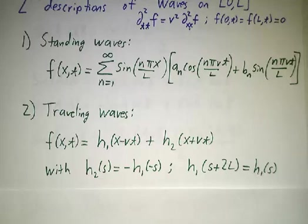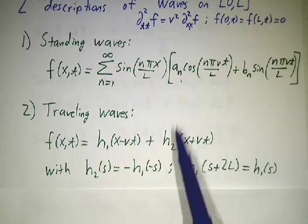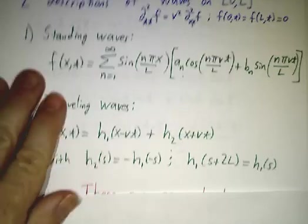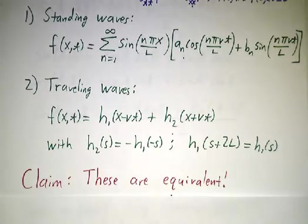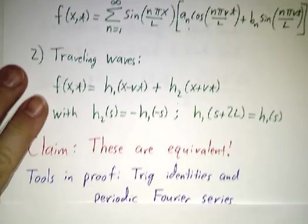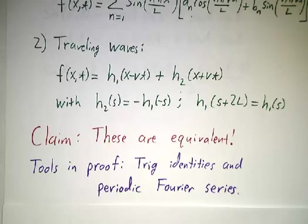So, which is right? Is this the solution to the vibrating string or is this? And of course the answer is that they're equivalent. They're both right. And we're going to prove that they're both right. And the way we're going to prove them, we're going to need some trig identities and we're going to have to look at the periodic Fourier series of h.